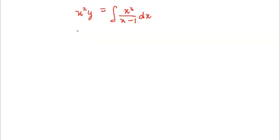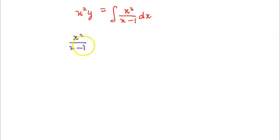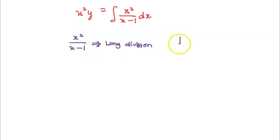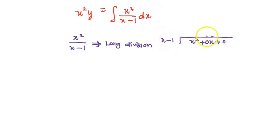Now, in order to proceed further, we need to integrate the function x squared over x minus 1. First, we examine x squared over x minus 1 — this is an improper fraction that needs to undergo long division. So we perform long division with x squared plus 0x plus 0 divided by x minus 1 as the divisor. Here x, if multiplied with x minus 1, gives us x squared minus x.